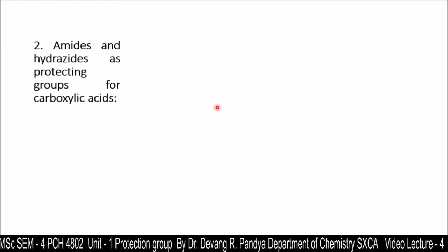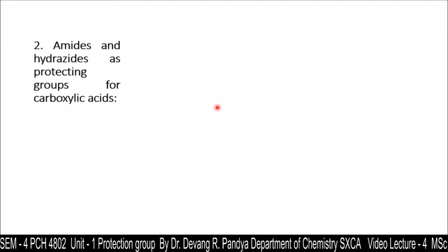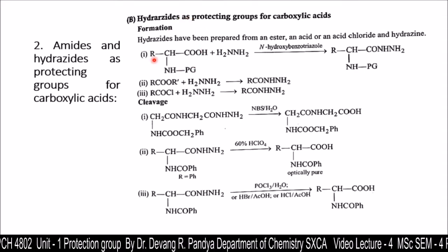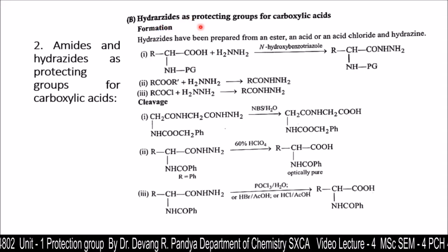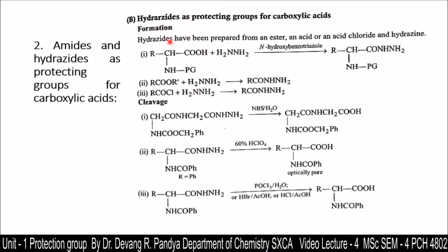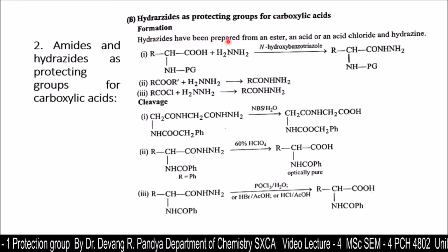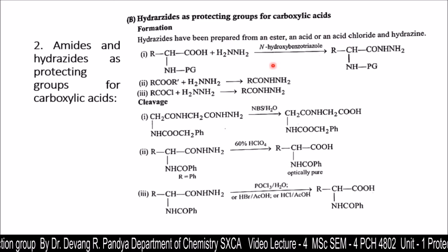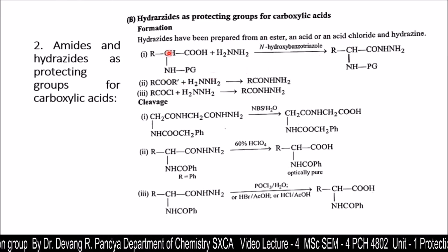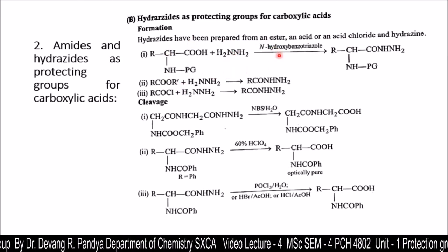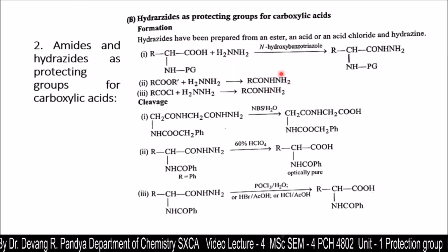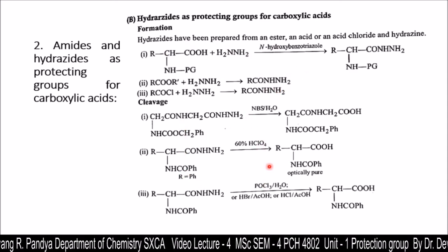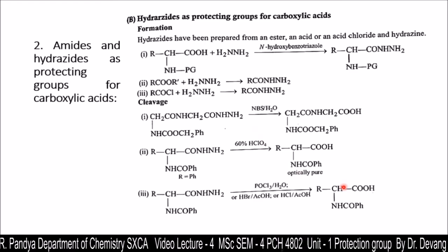Another example: hydrazides as protecting groups for carboxylic acids. Hydrazides have been prepared from an ester, an acid, an acid chloride, or hydrazine. These are the examples of different reagents used, and the hydrazides are cleaved using different reagents to give back the carboxylic group.